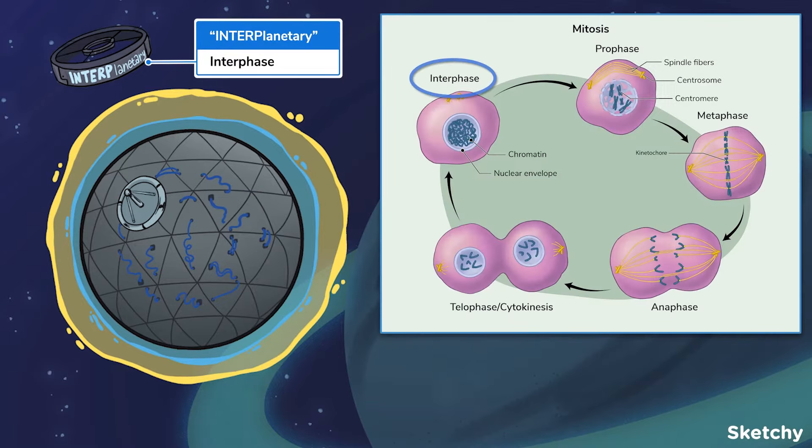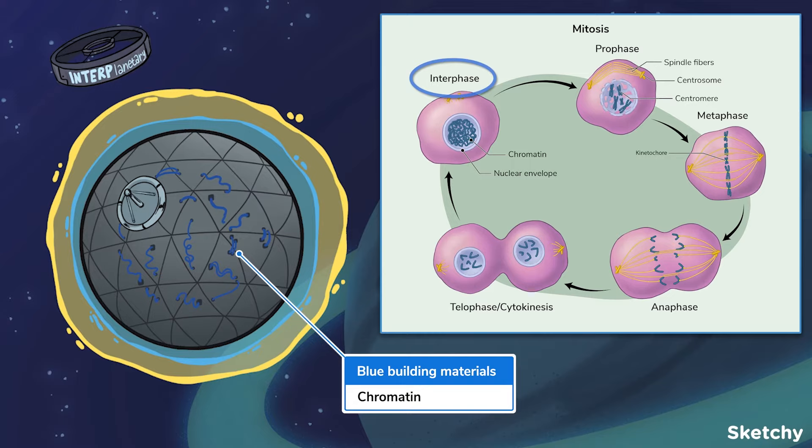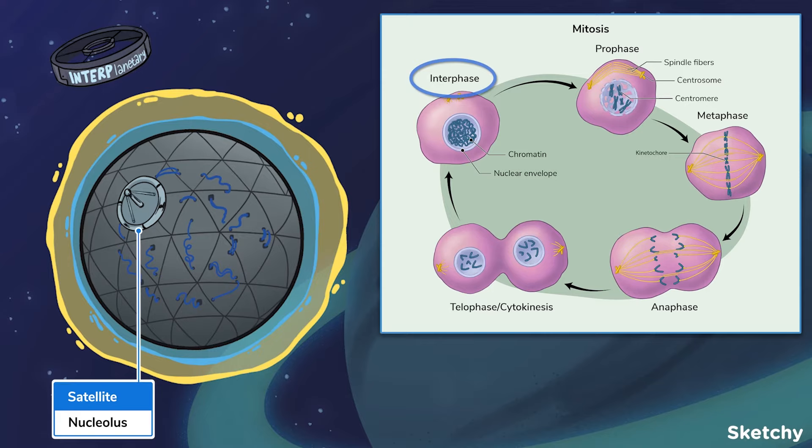Remember that the cell grows in size and generates a copy of its DNA during interphase. Another finding is that chromatin is loosely packed to permit transcription of genes. To show that, we drew some loosely arranged building materials. Well, that doesn't look up to code. There's also a nucleolus, shown here by this planet-destroying laser. Oopsie. I mean, satellite. Yeah. Satellite.